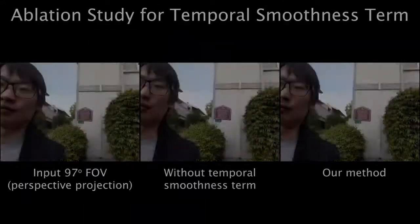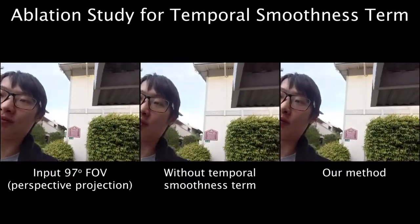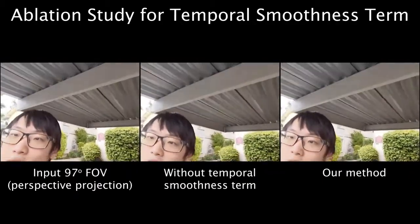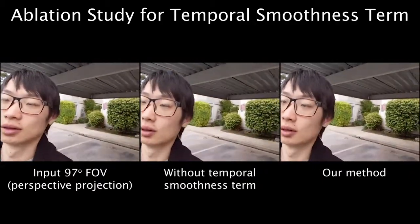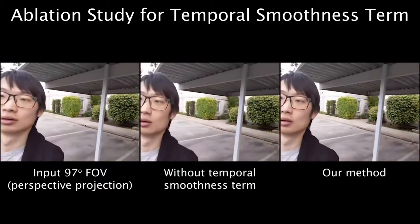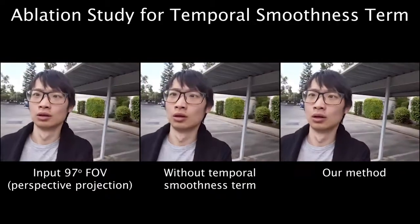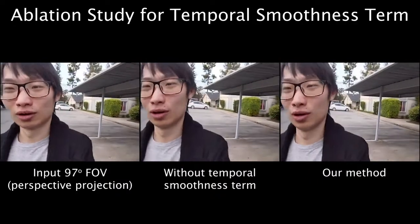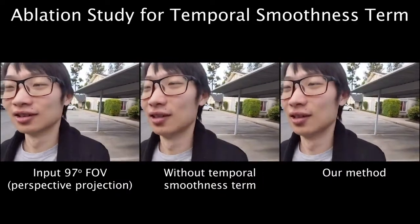Without the temporal smoothness term, the warping meshes are unstable when the subjects are moving or when face detection is missing. In contrast, our method is temporally stable even in challenging cases.